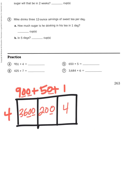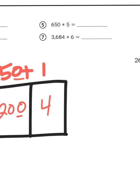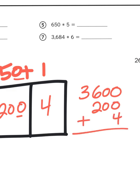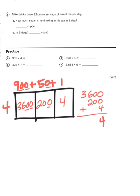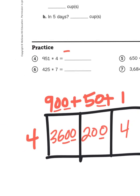And then I'm going to take those three partial products, even though I'm using partitioning rectangles. 3,600, 200, and four. And I'm going to add all three of those amounts together. And that's going to give me a grand total of 3,804. And that is my product, 3,804.